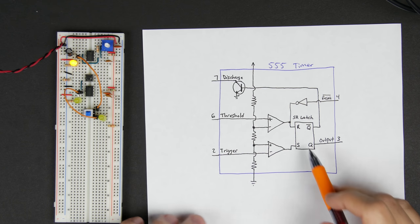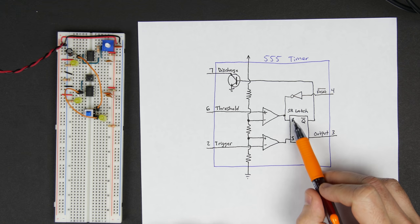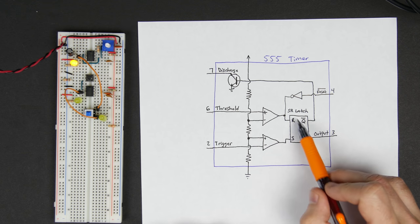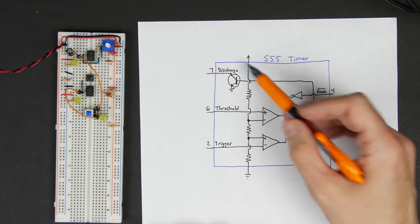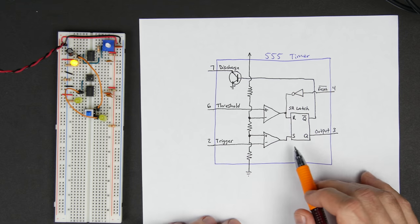And so for this next circuit, what we're going to do is, we're basically going to take advantage of the fact that the 555 timer has an SR latch built into it, and we're really only going to use the SR latch. We're just going to kind of try to ignore the rest of this stuff as much as we can.